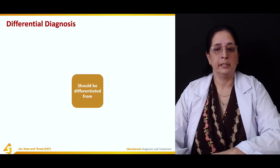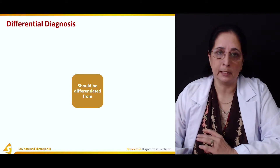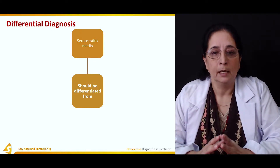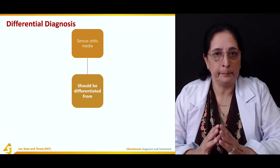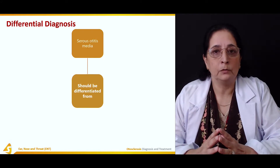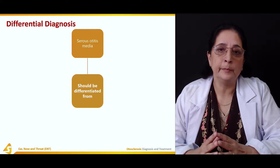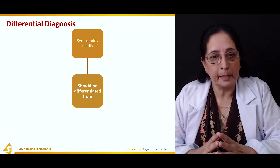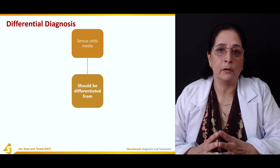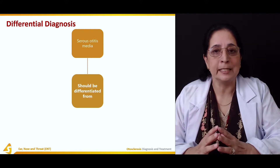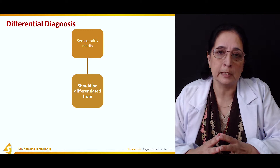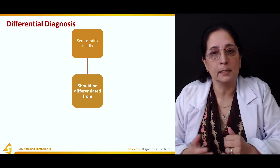The differential diagnosis of otosclerosis — it should be differentiated from serous otitis media. Serous otitis media is the middle ear infection in which there is clear fluid discharge coming out of the middle ear. There is usually perforation of the tympanic membrane, heaviness of the ear, hearing loss, tinnitus, and vertigo. It should be differentiated from otosclerosis by autoscopy and some other tests.